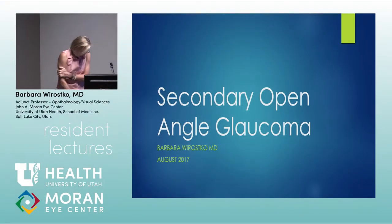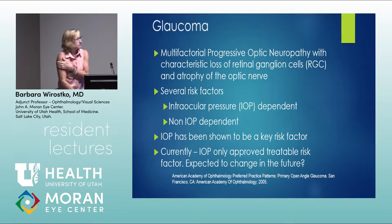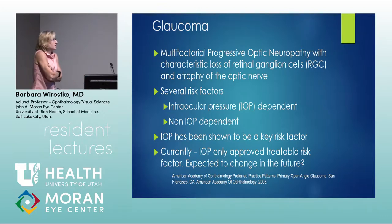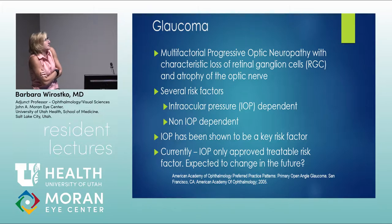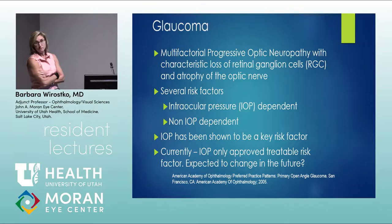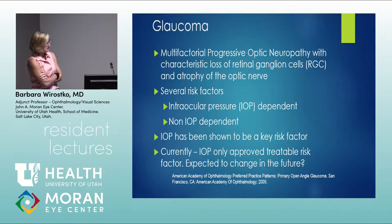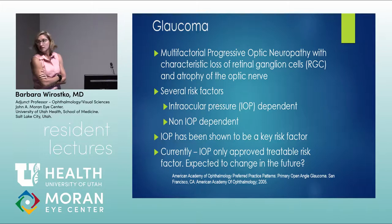Secondary open angle glaucoma — let's start with a brief review. It's a multifactorial progressive optic neuropathy with characteristic loss of retinal ganglion cells and atrophy of the optic nerve. We think about IOP-dependent and non-IOP-dependent mechanisms, and IOP is just a risk factor.